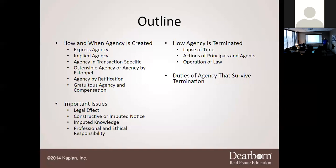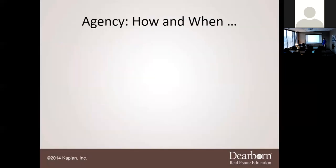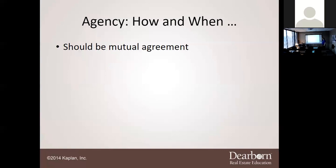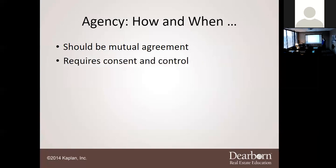The very first thing, common sense wise, is how and when is an agency created. If Cody is going to represent Miss Davenport, the key thing is that you have to have consent — it has to be an agreement. Miss Davenport has to be okay with Cody representing her, and Cody has to be okay with representing her as a client.